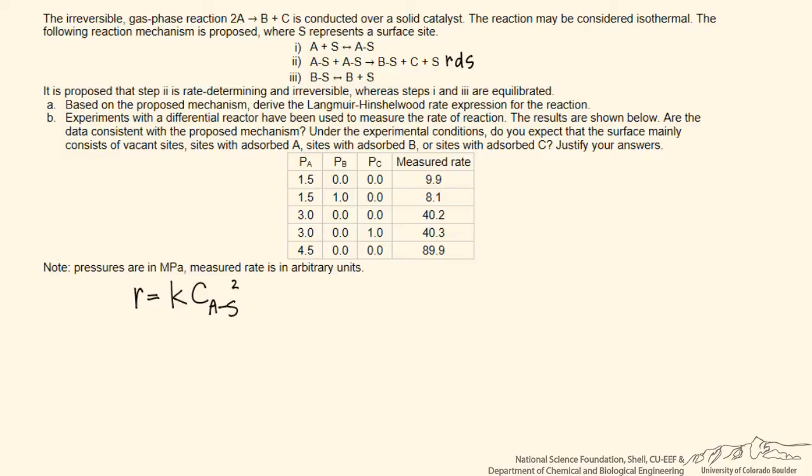We can't easily measure the concentration of A absorbed on the surface, so we want to express the rate in terms of partial pressures in the gas phase that are easier to measure and design a reactor for. To do that, we'll make equilibrium assumptions for all the other steps, assuming they're fast relative to the rate determining step and go to equilibrium, defining equilibrium constants for each step.